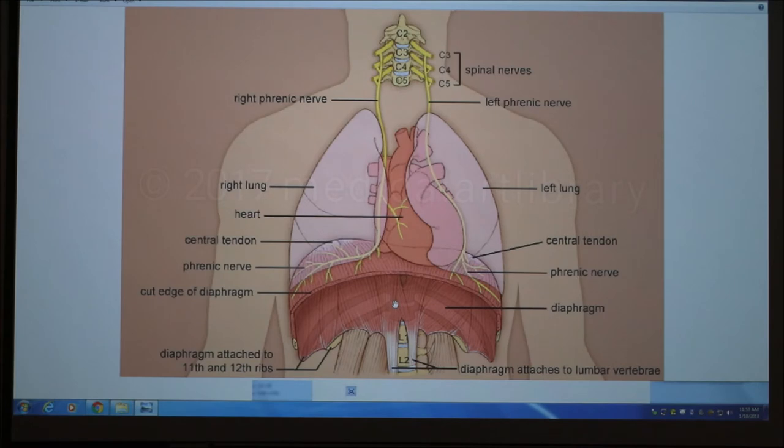Now, if you cut the phrenic nerve, the diaphragm will not contract. Anybody ever hear of anybody having the nerve cut or damaged? Do you guys remember Superman? Christopher Reeve fell off a horse. He broke his neck at like C2, the second cervical vertebra, and he then basically severed his phrenic nerve. So he could not breathe on his own.